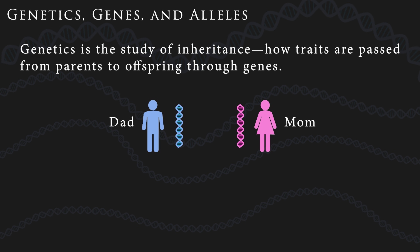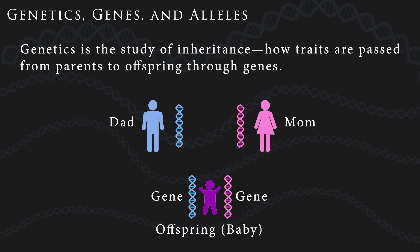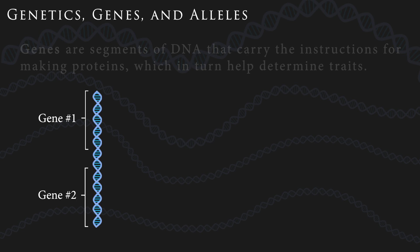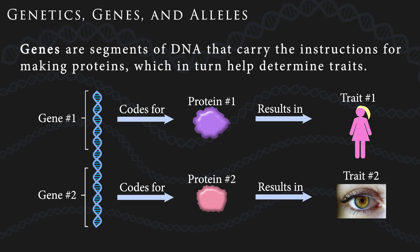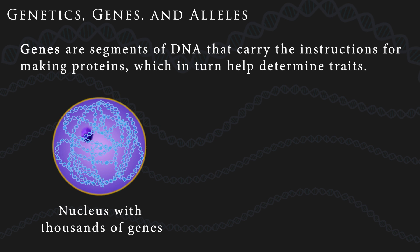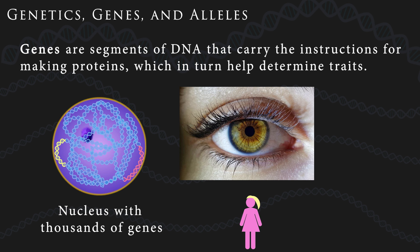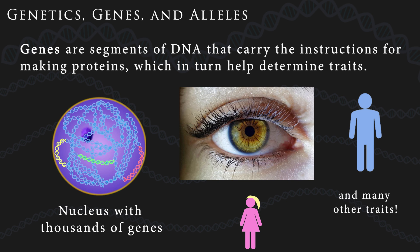Genetics is the study of inheritance — how traits are passed from parents to offspring through genes. Genes are segments of DNA that carry the instructions for making proteins, which in turn help determine traits. Organisms often have thousands of genes that influence things like eye color, hair color, height, and many other characteristics.